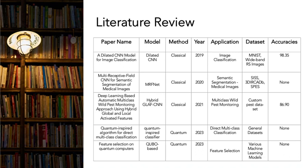Our literature review covers multi-classification using deep learning through classical and quantum approaches. We examine models including dilated CNN, MRF and MRFNet, hybrid graph CNN, quantum inspired classifier, and cubo-based algorithms, showcasing the diversity in current research as shown here in the table. This is just a sample of all the research papers that we did in the literature review.